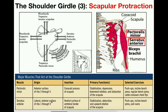The serratus anterior originates on the anterior surface of ribs one through nine. This muscle gets its name from its serrated look — when a person has a low enough body fat percentage, you can see knife-like serrations below the axillary region. That's because you essentially have nine independent muscle slips from ribs one through nine, and each combines to insert on the ventral surface of the vertebral border of the scapula, pulling it away from the midline — that's scapular protraction.